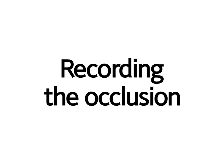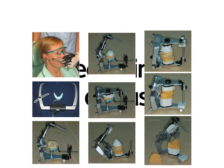The next option is the semi-adjustable articulator. These have the following features: the condyles are on the lower member of the articulator and the condylar guidance element is on the upper member — in other words, an arcon-type design. The intercondylar distance is variable. The maxillary cast is related to an approximation of the terminal hinge axis through the condyles. Condylar guidance is variable but only in straight lines. Some adjustment of the incisor guidance is usually possible.